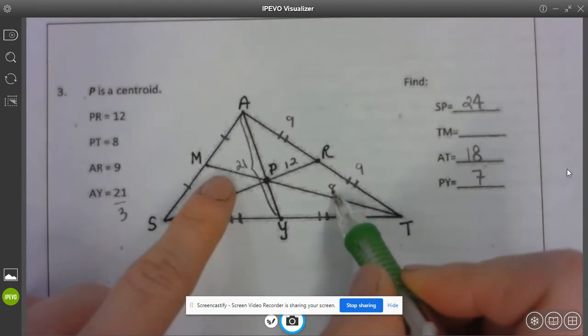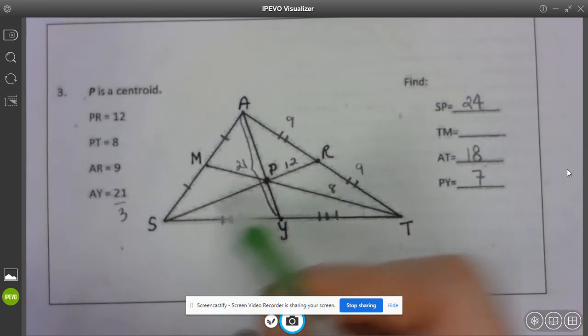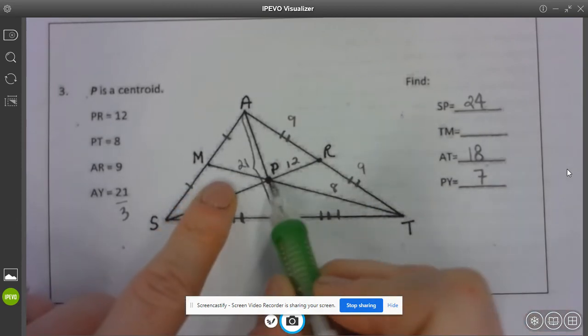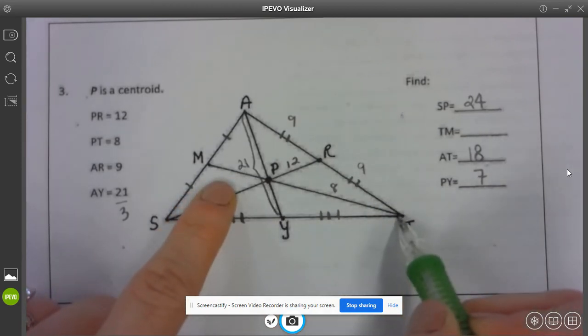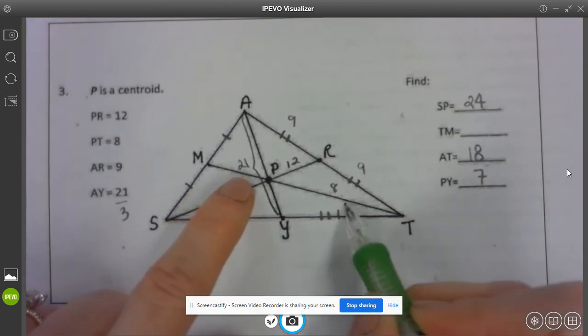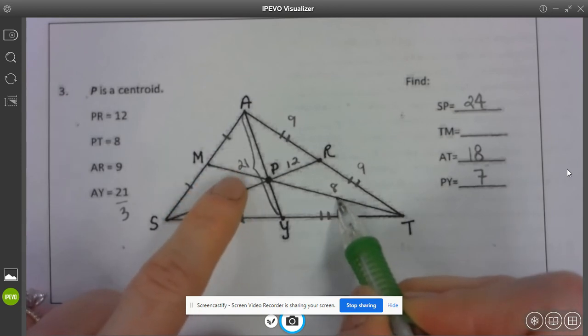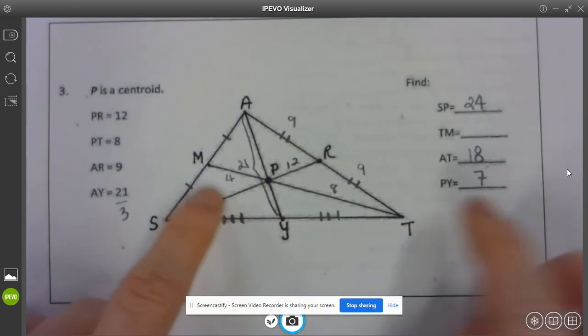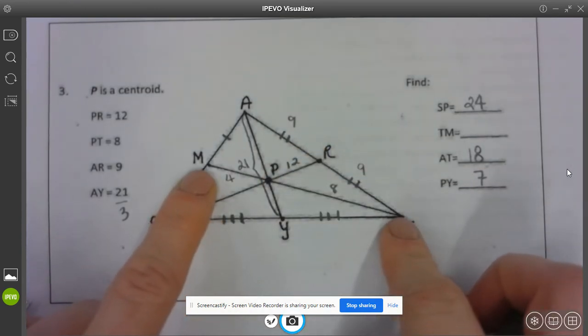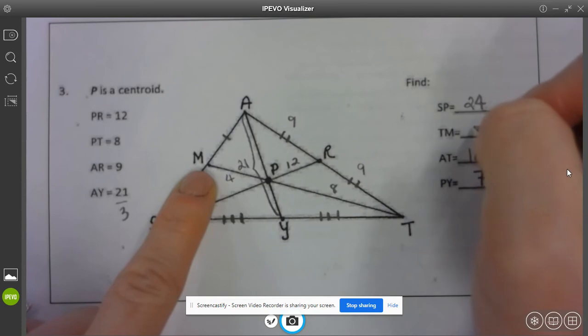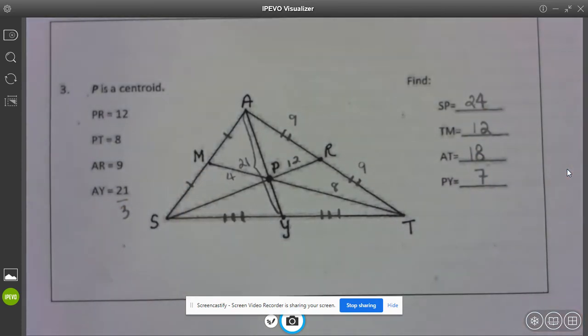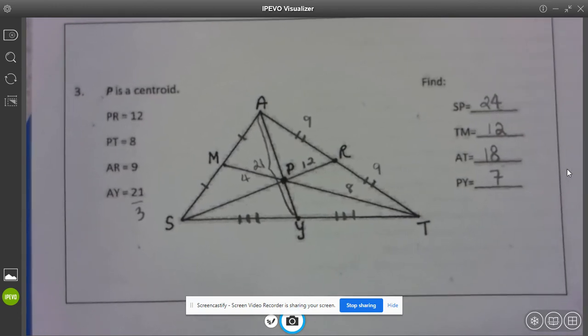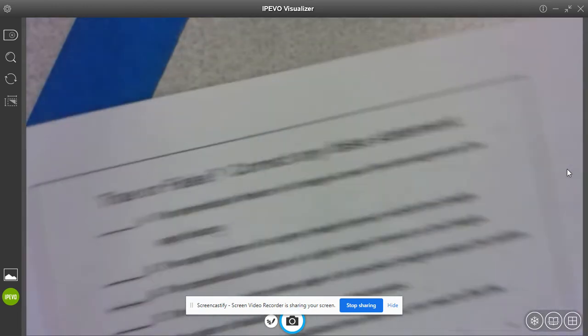Similar thing here as to what we did for SR. This PT is eight, this is double what PM is so PM is four so then TM this whole thing is eight and four added together which would be twelve.